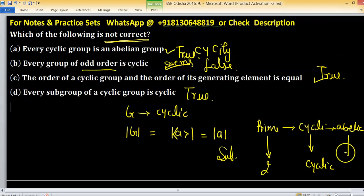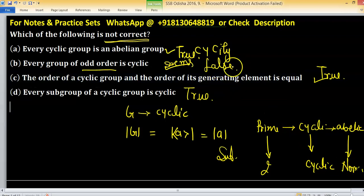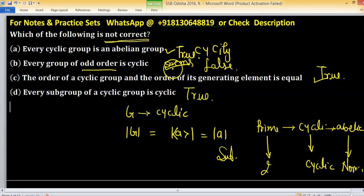If group is abelian then its all subgroups are normal. So this statement is false.